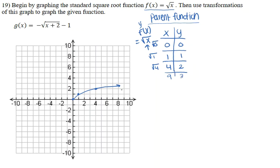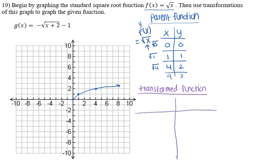Now let's find the transformed graph of our given function. For transformed functions, I'll make a t-chart to organize this. The x values are transformed by what is inside the argument — in our case x+2 — so we'll replace x with x+2. The y values are dictated by what's on the outside of the argument, such as the negative sign in front and the negative one in back, so we get negative times our y value, minus 1.